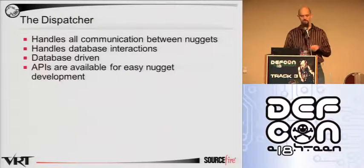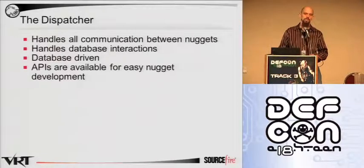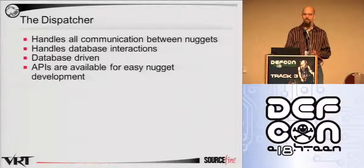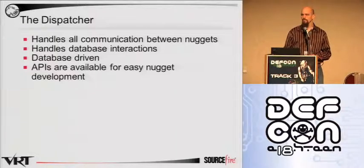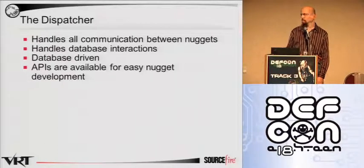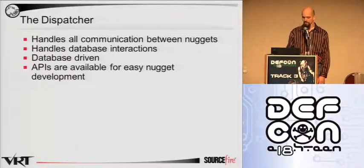The dispatcher handles all the incoming and output data, and also provides mechanisms for correlation nuggets to access the database and do advanced analysis. We also have an API developed to make the programmers' jobs easier so you can make custom nuggets and perform duties that we don't currently have. It's database-driven, containing configuration information and the different types of metadata so you can keep track of not only what data is in there and event data, but also just why.